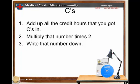Do the same thing for C's. Add up all the credit hours you got in C's, multiply that number times two and write it down to the side. And finally, add up all of the D's and multiply that number times one. F's and such don't count for grade point average purposes.